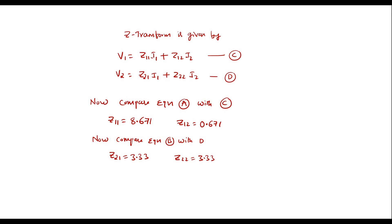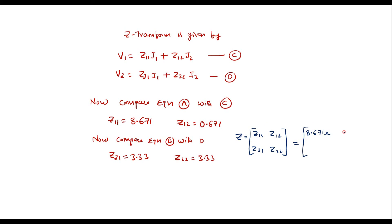The Z matrix is: Z = [Z11, Z12; Z21, Z22] = [8.671 ohm, 0.671 ohm; 3.33 ohm, 3.33 ohm]. These are the Z parameters of the given circuit. Thank you for watching.